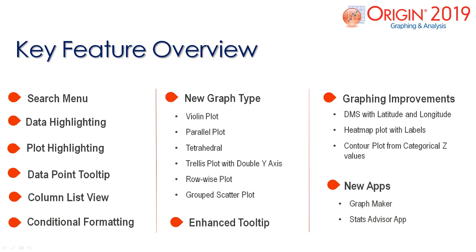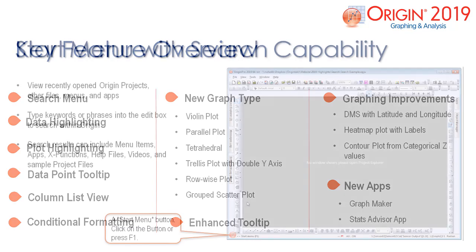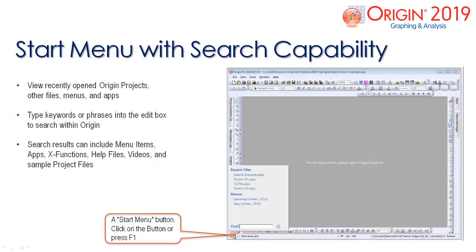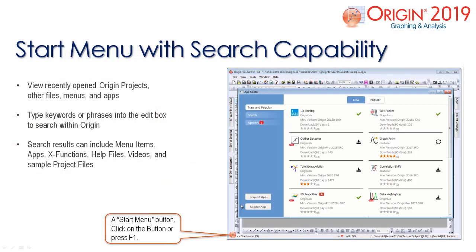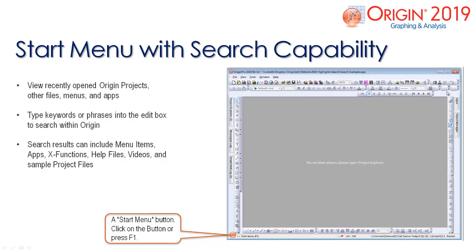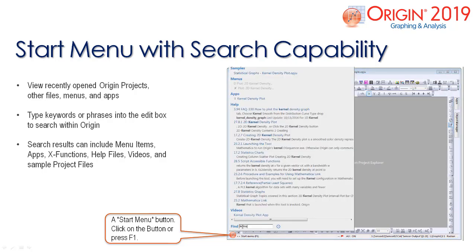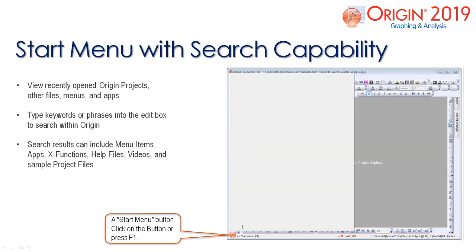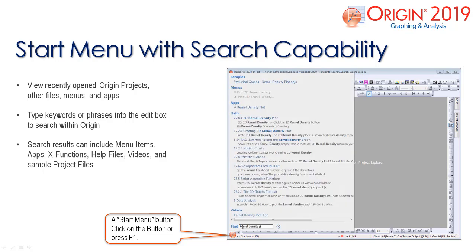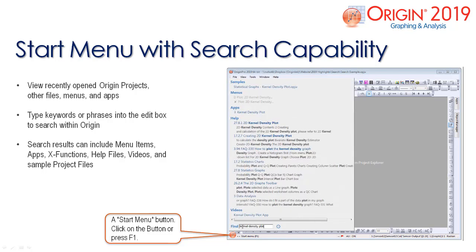New to Origin 2019 is the start menu search engine. Click the start menu or select F1 to search for an array of items such as recently opened Origin projects, menu bar items, and apps.